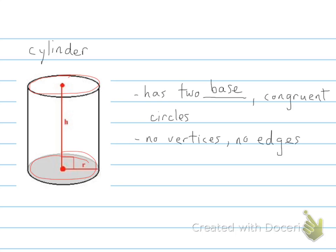And we'll get a little bit more into detail as to the formula for finding what we do with the cylinder. But for right now, that's all you need to know. Two bases and congruent circles with no vertices or edges.